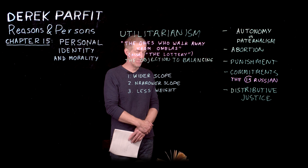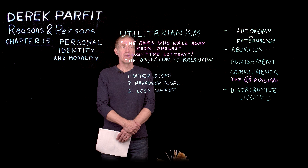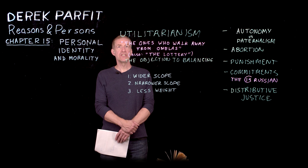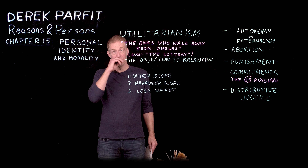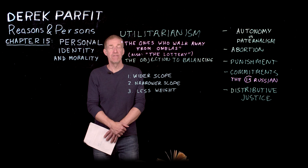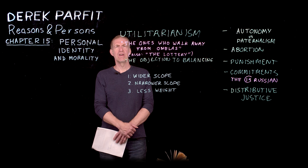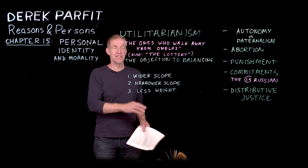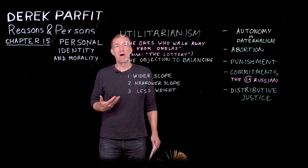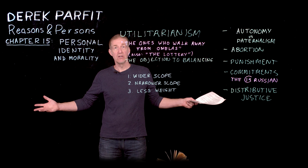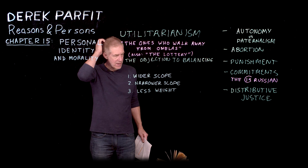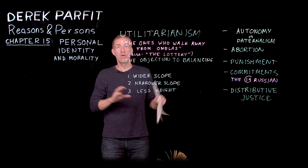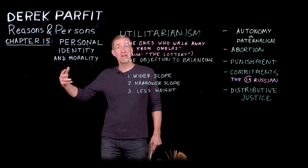Utilitarianism is a consequentialist theory that says the measure of whether something is a good outcome is in terms of benefit, welfare, happiness, or pleasure — all of these things sort of overlap. Jeremy Bentham, who more or less started the modern version of utilitarianism, says we should maximize pleasure. The right action is one that maximizes pleasure for everyone affected. Utilitarianism says minimize pain — you maximize the balance of pleasure over pain. The goal is to create the greatest sum total of pleasure in the universe. That's the aim of morality and anything that brings that about is good.